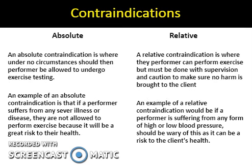We are also looking at Contraindications. There are two different types of Contraindications which are absolute and relative. An absolute Contraindication is where under no circumstances should a performer be allowed to undergo exercise testing. An example of an absolute Contraindication is if a performer suffers from any severe illness or disease, they are not allowed to perform exercise because it will be a great risk to their health.